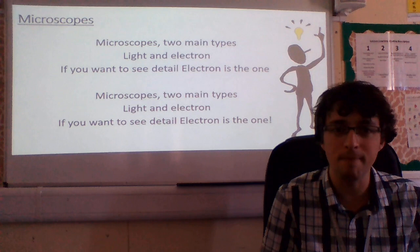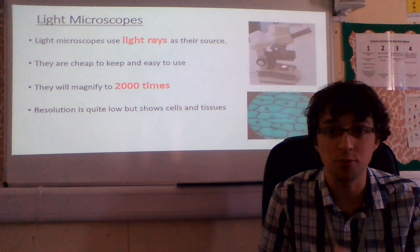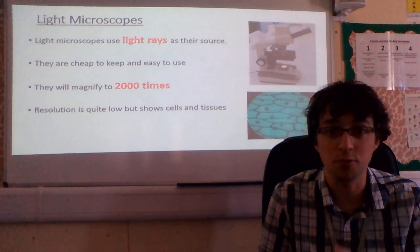So there you go, two types of microscopes: light microscopes and electron microscopes. Light microscopes use light rays, they magnify to 2,000 times. Whereas electron microscopes, we're talking about using electrons, up to 500,000 times magnification. Amazing.